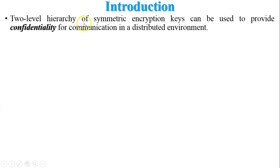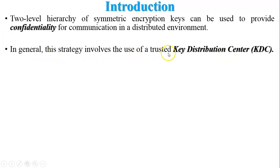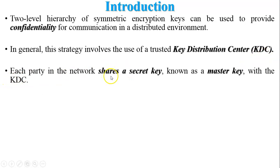A two-level hierarchy of symmetric encryption keys can be used to provide confidentiality for communication in a distributed environment. This means two different symmetric keys are used for encryption: one key is used for data encryption, and the second key is used to encrypt the session key for exchanging between two users. In general, this strategy involves the use of a trusted Key Distribution Center, called KDC. Each party in the network shares a secret key known as the master key with the KDC — that master key is only known by the KDC and that specific user.